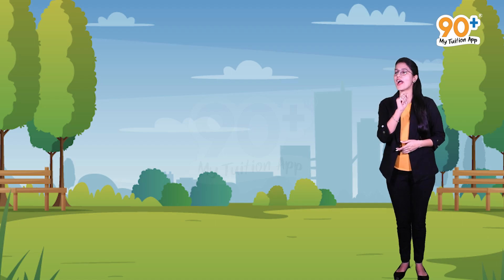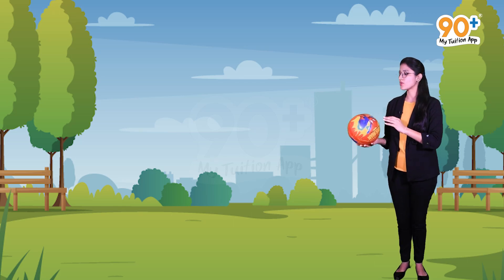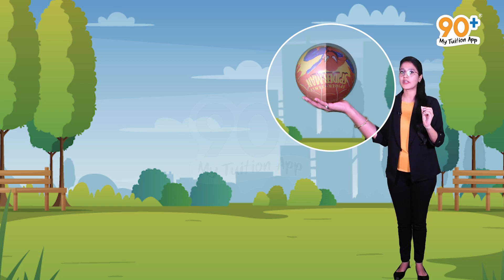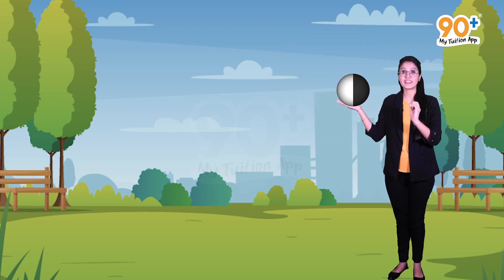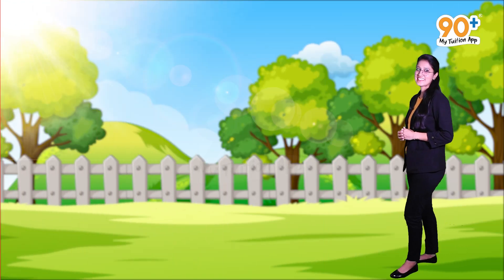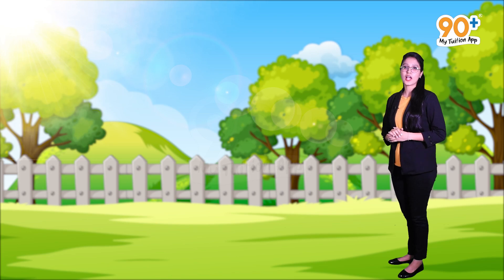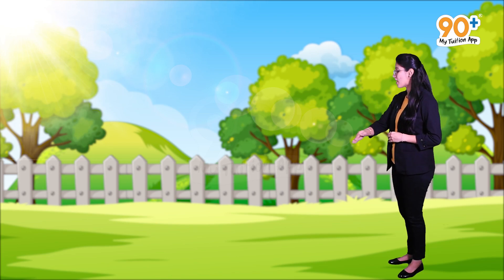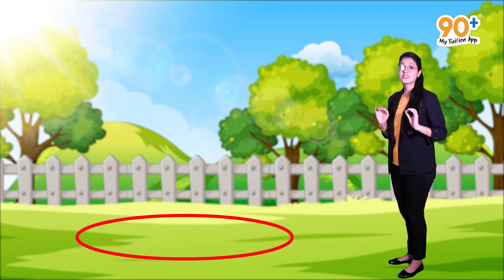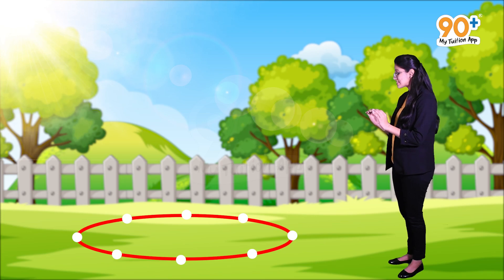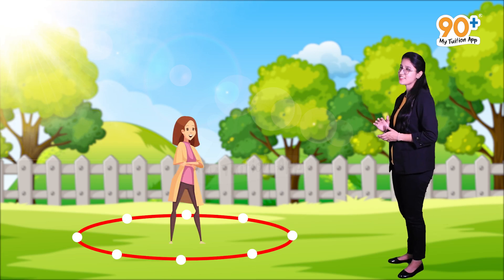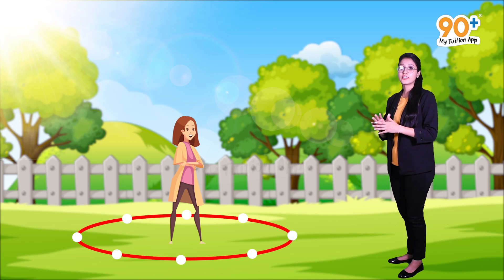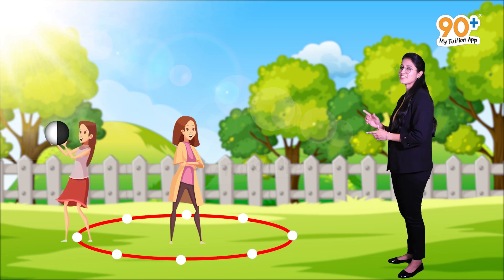Let's do an activity to understand this concept clearly. Chams, you have to take a big ball like this. Paint this ball so that half of it appears white and the other half appears black. Now go to the playground with two of your friends. In the playground, draw a circle of radius above 2 meters like this, and divide this circle into 8 equal parts as shown here. Tell one of your friends to stand at the center of the circle, and tell your other friend to hold the ball at different positions on the circle.